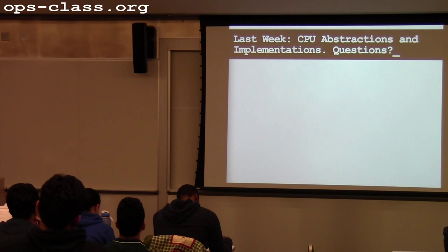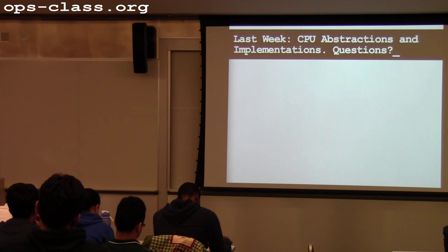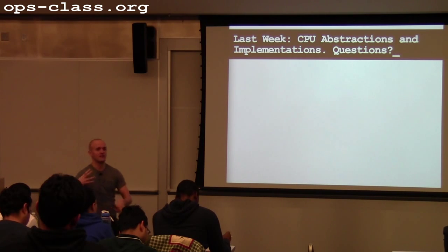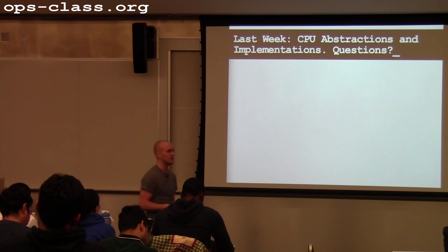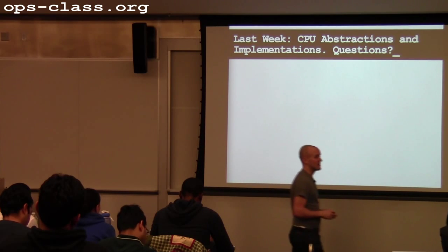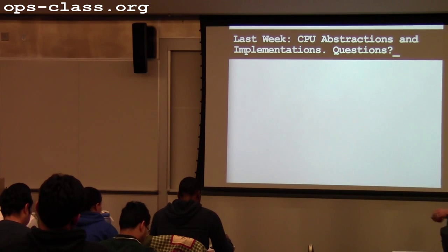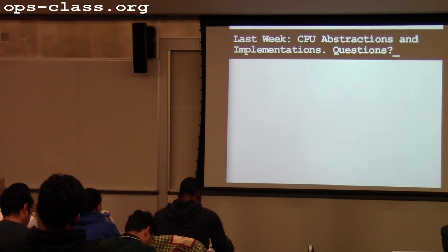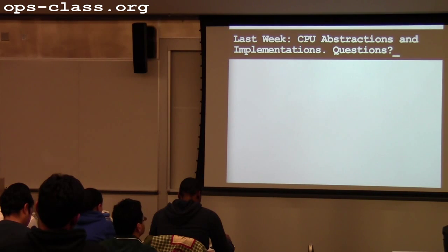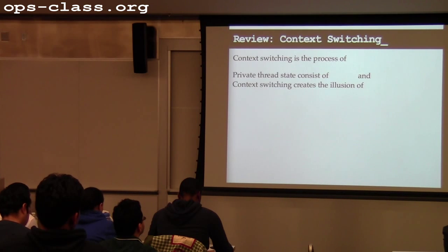Any questions about last week's material? Last week we did CPU abstractions — we talked about the implementation required to move threads on and off the CPU, thread state, and thread abstraction. Any questions about that before we plow forward? We're not going to do too much review today, just a little bit.